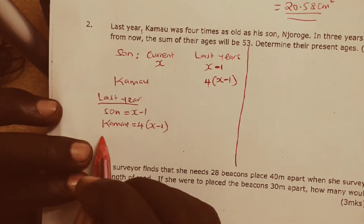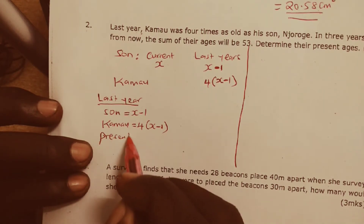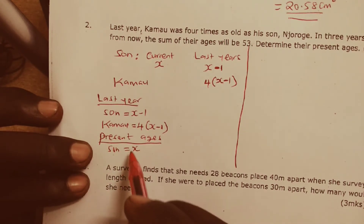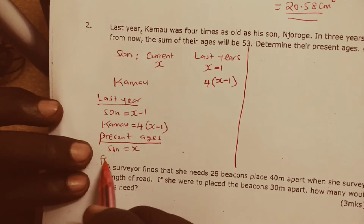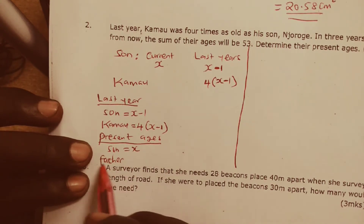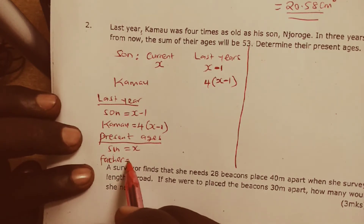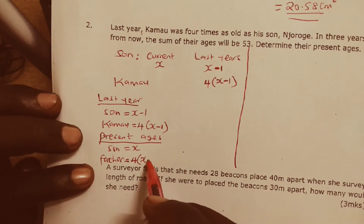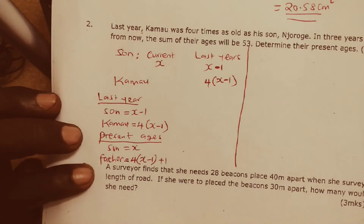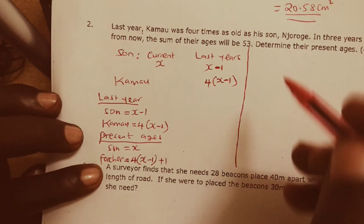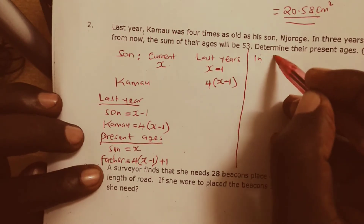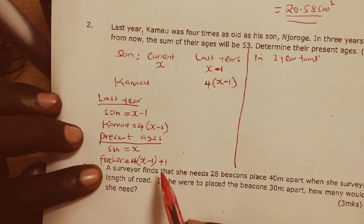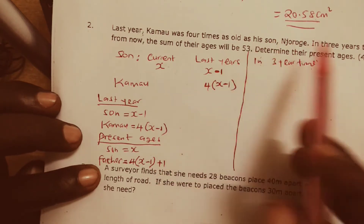Now to get the present age: the son is X. The father, who is Kamau, is going to be equal to four times (X minus 1) — that is last year — then we add one to get the present age. In three years' time, it means each one of them would have added three more years.